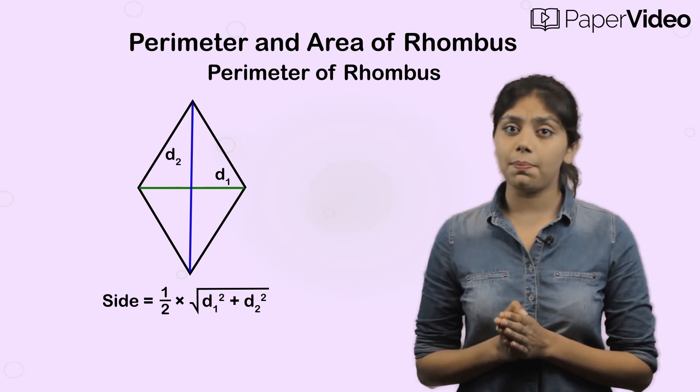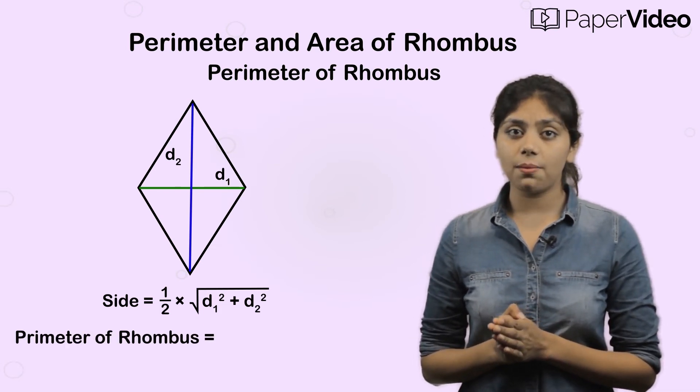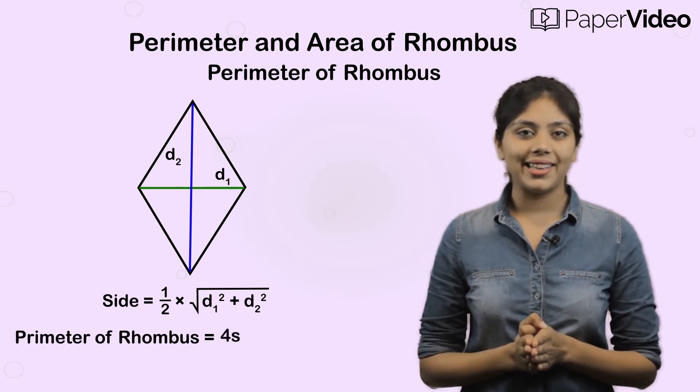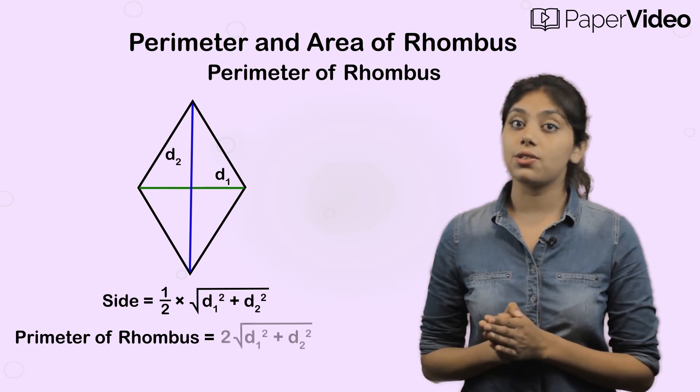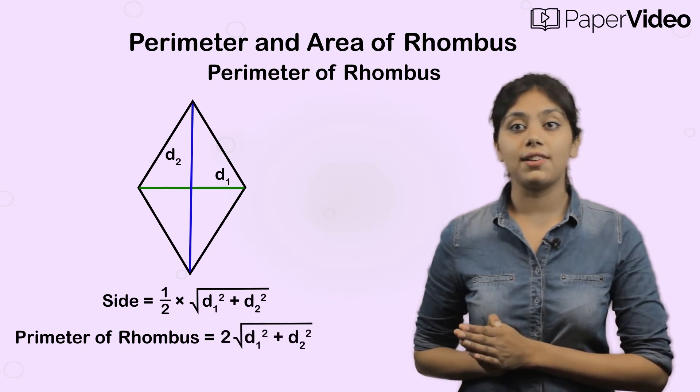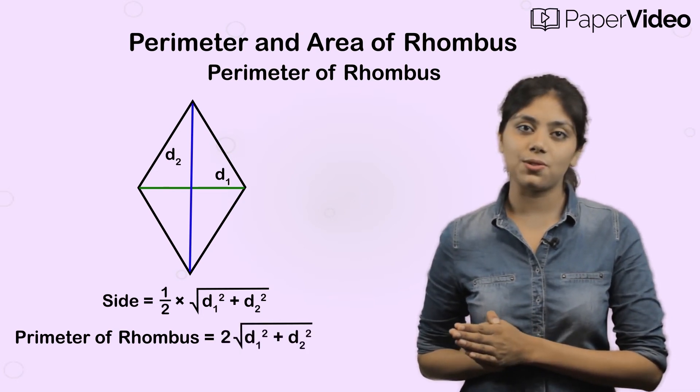Now can you find the perimeter of the rhombus? That's right — it will be 2 times the square root of D1 squared plus D2 squared.